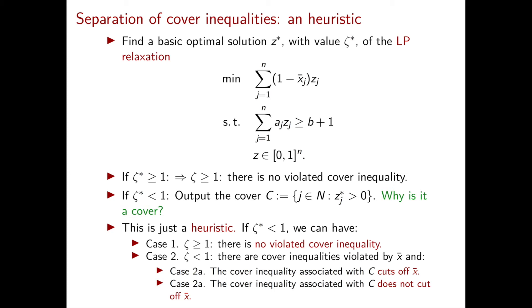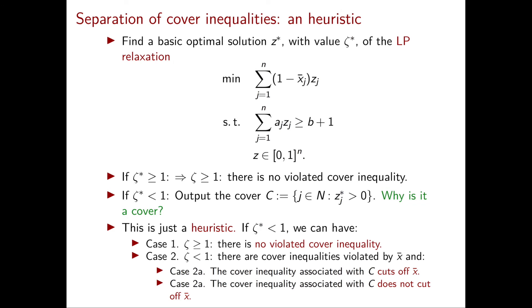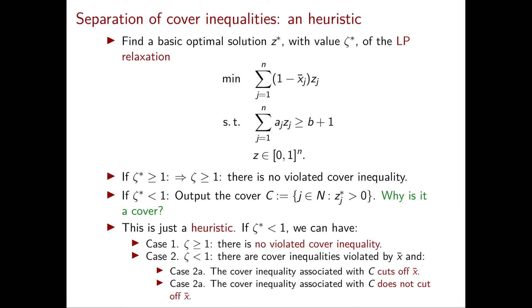So we're going to have to pay the price of our heuristic only in the remaining case: ζ* strictly smaller than 1. In this case, our heuristic just outputs the following cover: C is the set of j's with z*ⱼ strictly larger than 0.